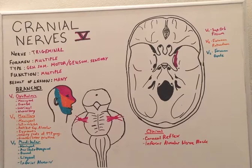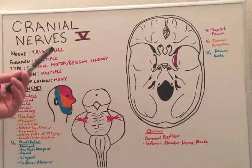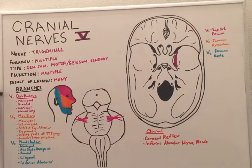So the cranial nerve has multiple foramen that it passes through. It begins with its fibers coming out of the lateral aspect of the pons and it creates a ganglion here called the trigeminal ganglion, and then it splits into three branches, hence the name trigeminal.